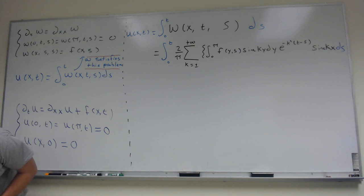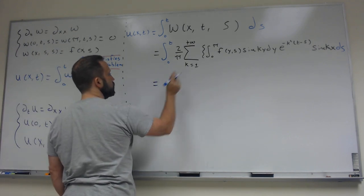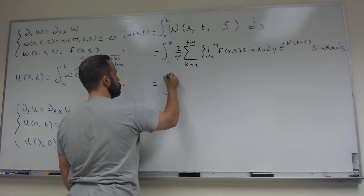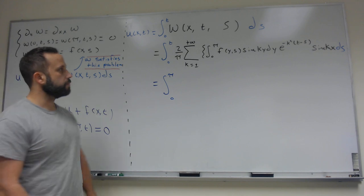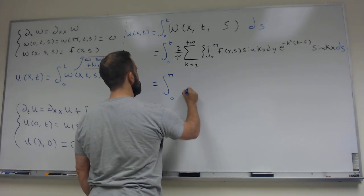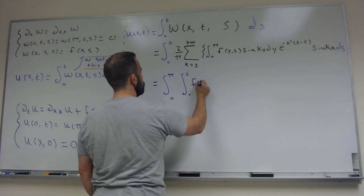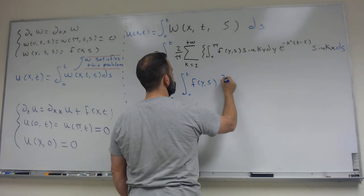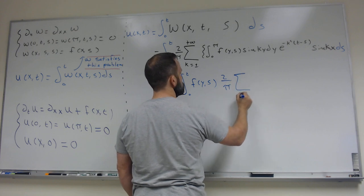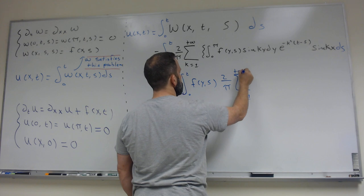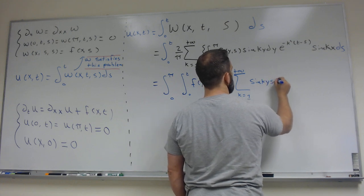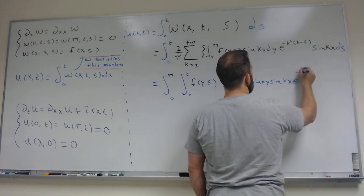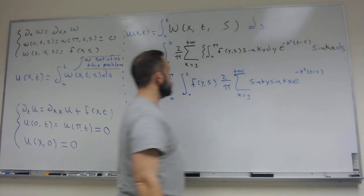Now there are a number of ways that we can rewrite this, and we'll see different and more convenient ways, especially when we get to Green's function. I'm going to rewrite it with the 0-to-pi integral on the outside. So this is going to be the integral from 0 to pi, then the integral from 0 to t, then f(y,s), and then everything else: 2 over pi times the sum from k equals 1 to infinity of sine(ky) · sine(kx) · e^{−k²(t−s)}, then ds dy.